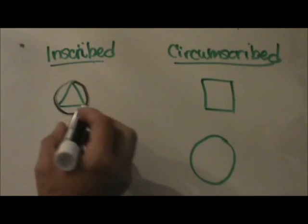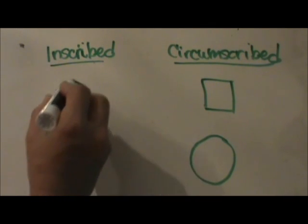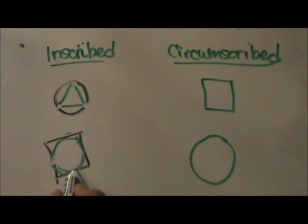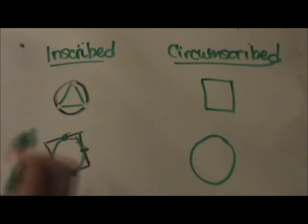For it to be inscribed all the vertices need to touch the circle and the circle has to be tangent to the polygon. So these are points of tangency. They touch in one point.